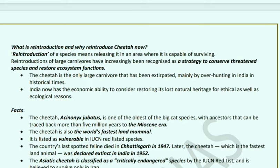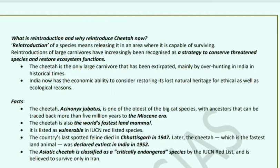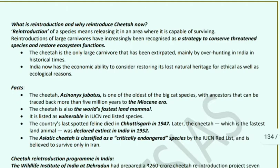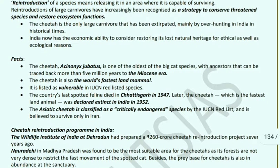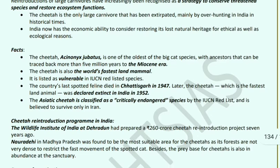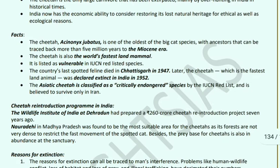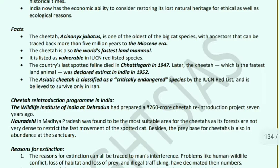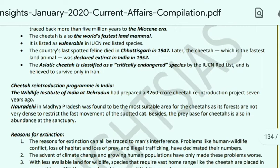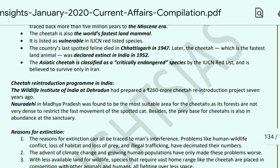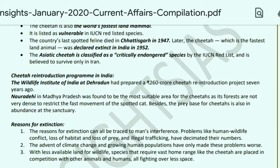The cheetah is the only large carnivore extirpated mainly by overhunting in India in historical times, and India now has the economic ability to restore its lost natural heritage both ethically and ecologically. The cheetah — Acinonyx jubatus — is one of the oldest big cat species, with ancestors traceable to over 5 million years ago, even to the Miocene era. It is the world's fastest land mammal and is in the IUCN Red List's Vulnerable category. The country's last spotted feline died in 1947, and the cheetah was officially declared extinct in India in 1952. The Asiatic cheetah is critically endangered and is believed to survive only in Iran.